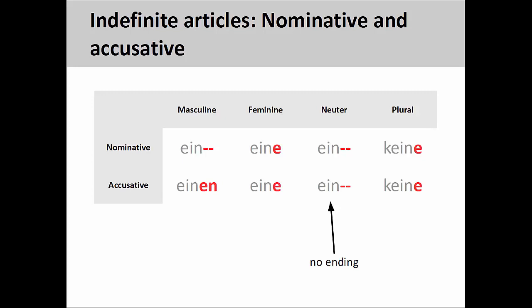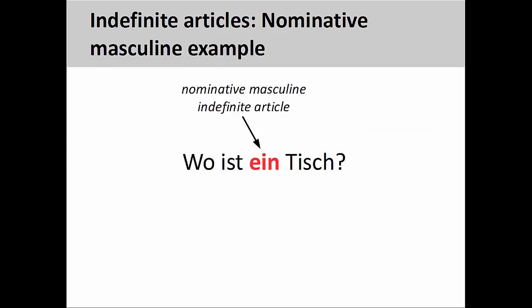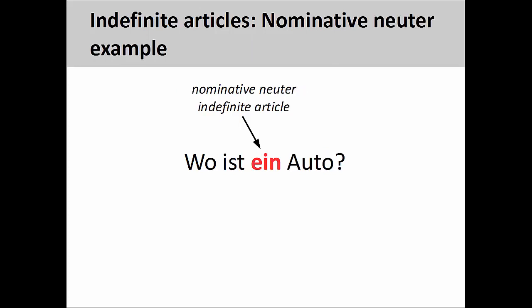Let's take a look at a few sentences to explain this a bit more. In the sentence 'Wo ist ein Tisch?' — 'Where is a table?' — it is difficult to know whether the noun is masculine or neuter, since 'ein' does not take an ending. The same applies with 'Wo ist ein Auto?' — 'Where is a car?' In these cases, you simply need to memorize whether the noun is masculine or neuter.